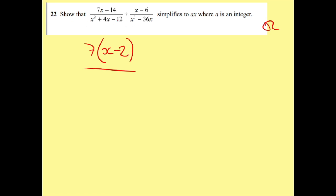The bottom one, that's quadratic, so it's going to be two brackets, x and x. What is it? Let's just find factor pairs: 1 times minus 12, 2 times minus 6, 3 times minus 4.